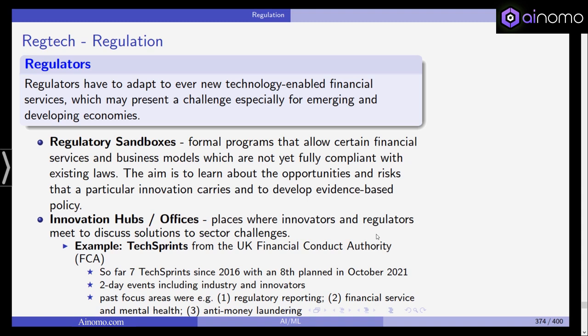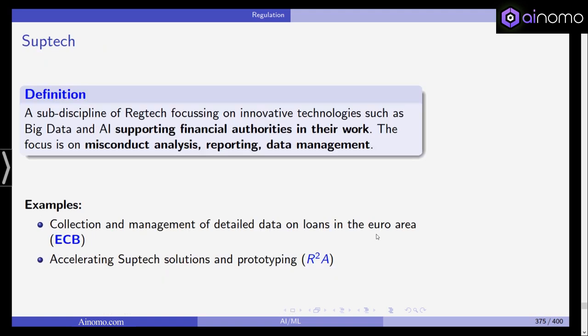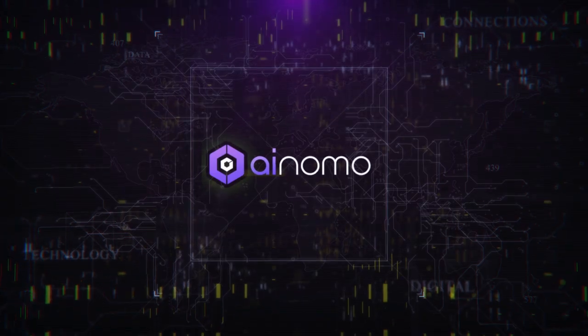Some regulators, like the UK FCA, also have innovation hubs or innovation offices — places where innovators and regulators meet to discuss solutions to challenges in the financial sector. For example, in the UK there have been tech sprints: two-day events including industry representatives and innovators, covering topics such as regulatory reporting, financial services and mental health, and anti-money laundering. This is how regulators and the industry discuss new ideas around new technologies and new challenges. So that's RegTech, and in the next video we'll switch to SupTech.